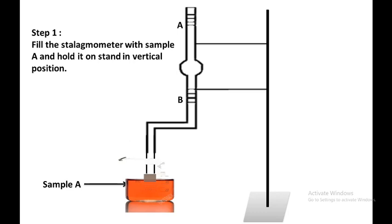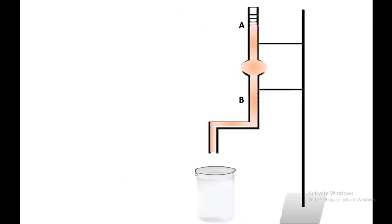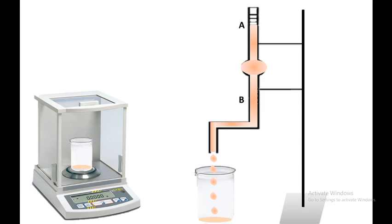Again clean and dry the stalagmometer and mount it on the stand in a perfectly vertical position. Then suck the sample under test — sample A — up to mark A using a pipette sucker. Hold the liquid using your thumb, then release. Collect the same number of drops — 20 drops of sample A — in another clean and dry glass beaker. Take the weight of these 20 drops; it is showing 25.287 grams.